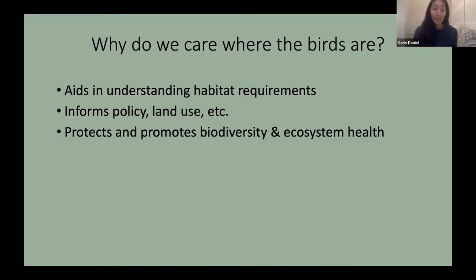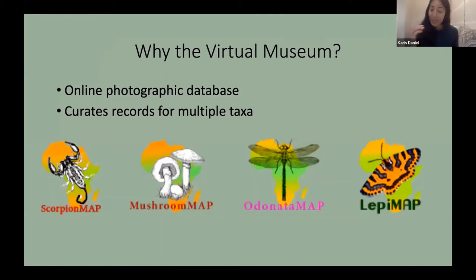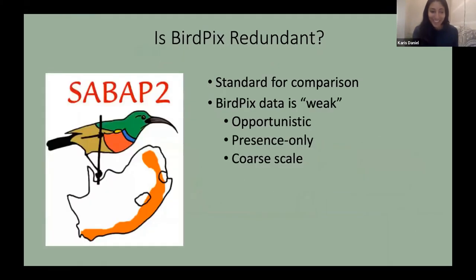How does the virtual museum address these big picture goals? As a brief reminder, the virtual museum is an online database of photographic records that curates records for multiple taxa: fungi, scorpions, Odonata, Lepidoptera, freshwater fish, reptiles, frogs, and of course birds. Many of you will also be familiar with the South African Bird Atlas Project, a citizen science initiative focused on mapping and monitoring species distributions, which has achieved amazing coverage across southern Africa through millions of records. So one might wonder — is bird pics redundant?